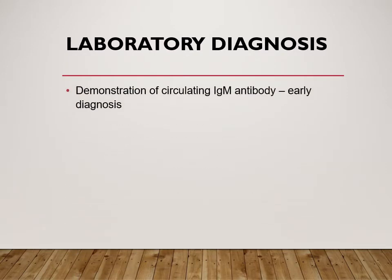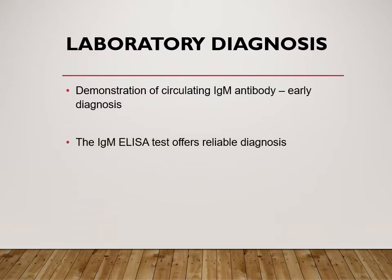Diagnosis of dengue is based on history and laboratory tests. It is very important to know the day of fever: if it is day 1 to 5, we go for antigen detection (NS1); if it is beyond day 5, we go for antibody detection. Rapid card tests were used for NS1 antigen detection, but since 2016 guidelines require that a positive rapid card result must be confirmed by ELISA to be considered a confirmed case.